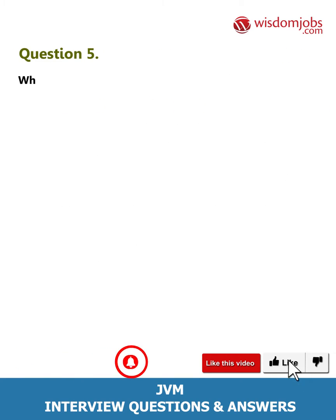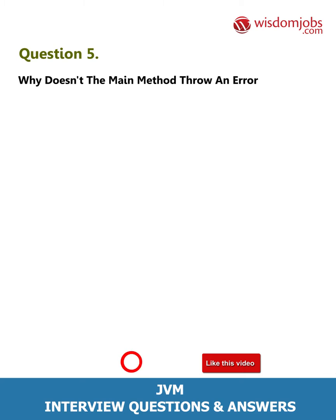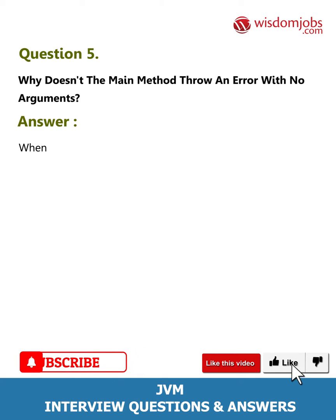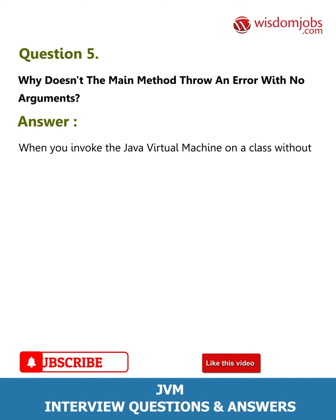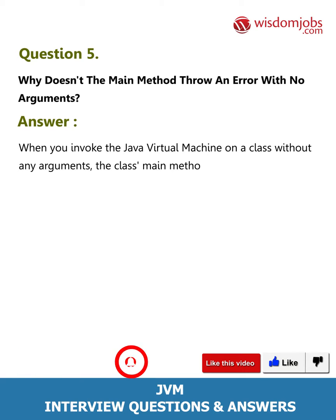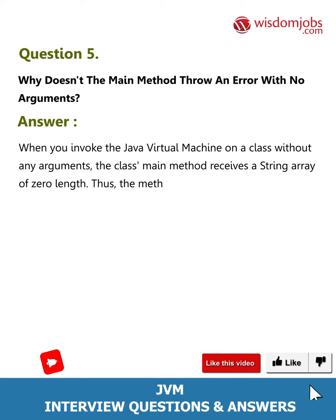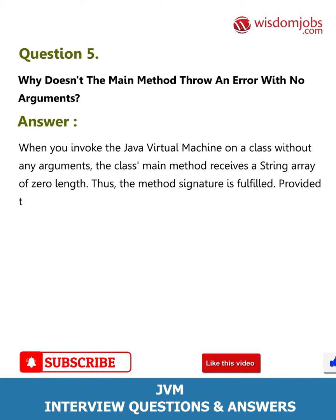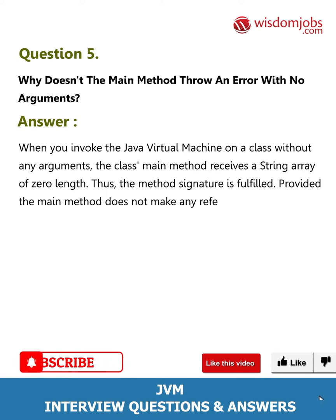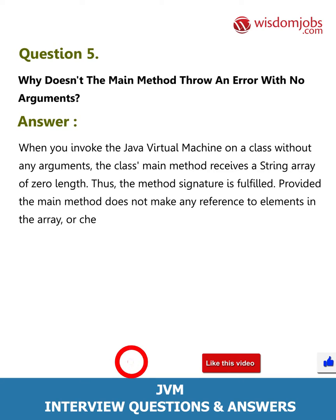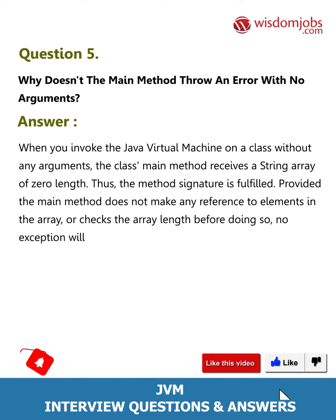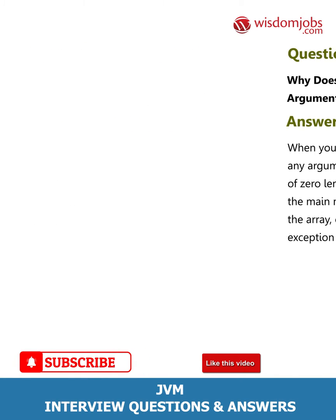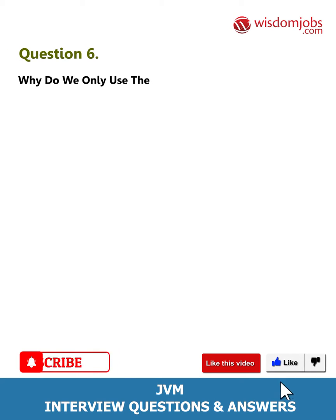Question 5: Why doesn't the main method throw an error with no arguments? Answer: When you invoke the Java Virtual Machine on a class without any arguments, the class's main method receives a string array of zero length. Thus the method signature is fulfilled, provided the main method does not make any reference to elements in the array, or checks the array length before doing so — no exception will occur.